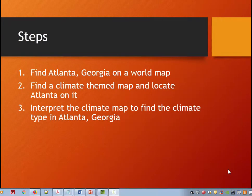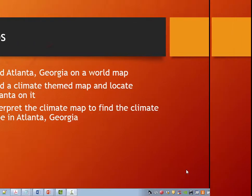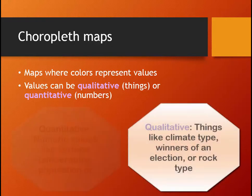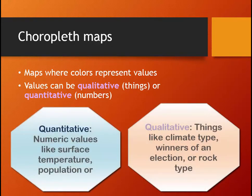Now that I know where Atlanta is in the world, I need to find that location on the world climate map. The climate regions map is a choropleth map where the color represents a qualitative or quantitative value. In this case the colors represent a qualitative value: climate types.